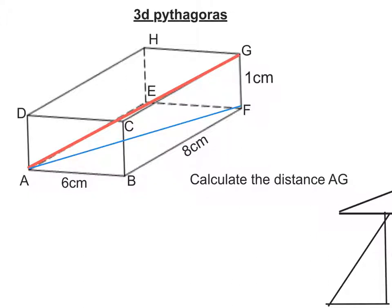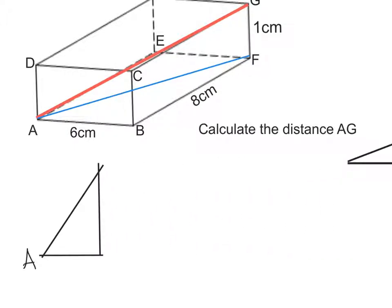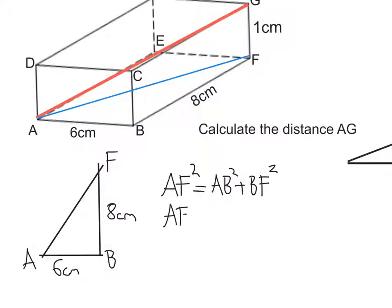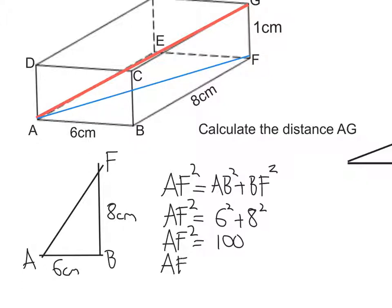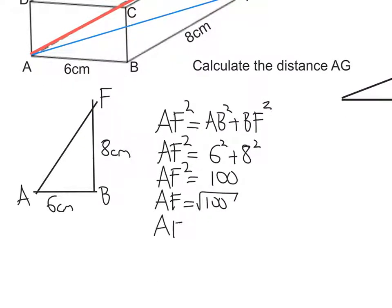The first thing I'm going to do is to work out AF as a triangle ABF. So, let's draw that triangle out. Let's put some labels on: A, B, and F. I know the distance from A to B is 6 centimetres, and from B to F is 8 centimetres. So, to work out the length AF: AF squared is the same as AB squared plus BF squared. Substituting in: 6 squared plus 8 squared, which gives us 100. Square rooting 100, AF is equal to 10 centimetres.